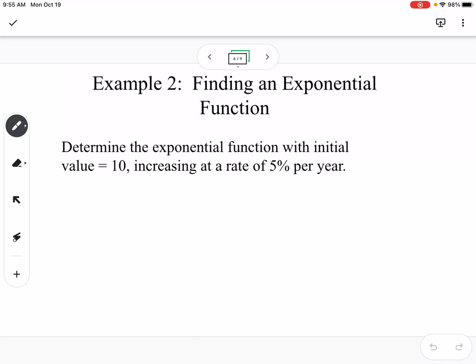Example two, we're going to find an exponential function. Determine the exponential function with an initial value of 10 and increasing at a rate of 5% per year. So we would say P of T equals 10 times 1 plus 0.05 raised to the T, and then oftentimes you're going to see it simplified, so this would be 10 times 1.05 raised to the T.